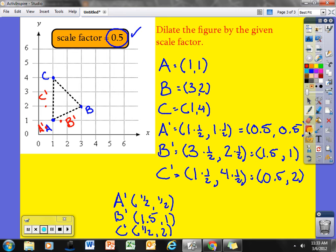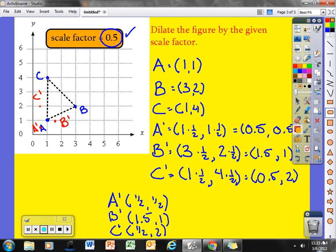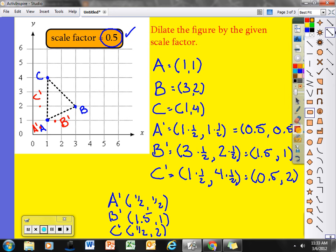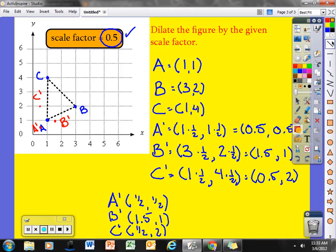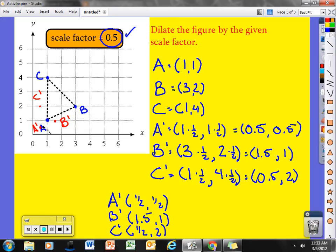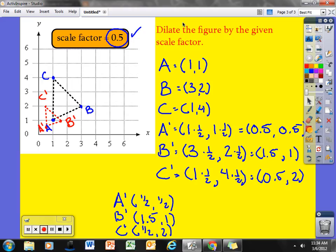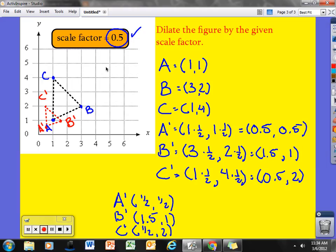Now, if I want to connect those points to construct the triangle, I'll connect A prime to B prime, B prime to C prime, and C prime back to A prime. And there I have constructed my new scale model, my dilated figure, that is a scale factor of 5 tenths.